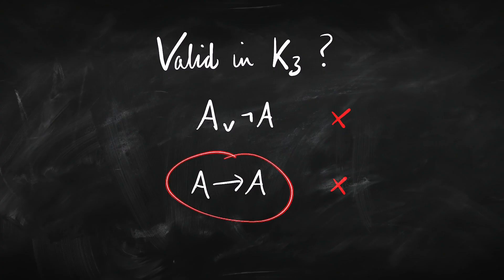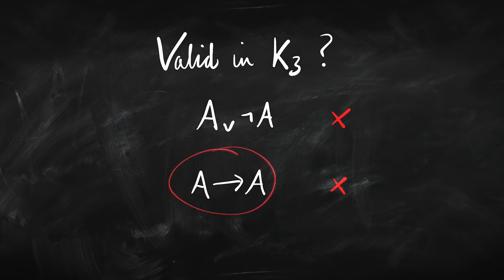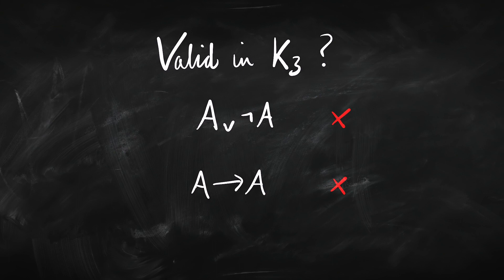There are going to be sentences that are never false. In particular, A∨¬A is never false — there's no way of making that sentence false. And there's no way of making A→A false either. But these sentences can be 'other,' and if we're taking validity to mean always true, these sentences won't be valid. No sentence will be valid in K3.